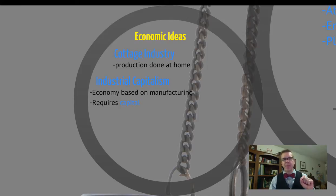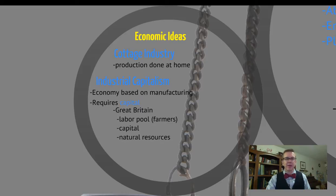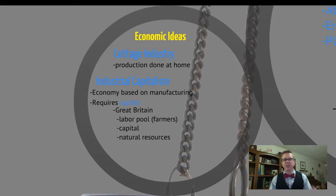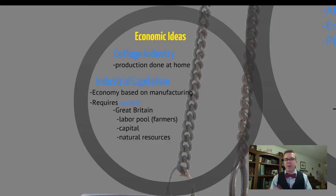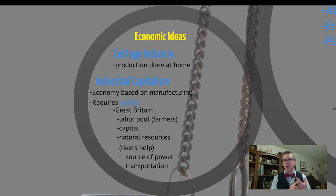Industrial capitalism requires capital — the money and wealth that is invested in these factories. Without capital, you can't get this done. Great Britain is able to become the first country to go through the Industrial Revolution for several reasons. First, they've got a large labor pool — farmers who, once replaced by new agricultural inventions, come to the cities just in time to become labor for the new factories. It also requires capital and natural resources. In Britain's case, that's coal and iron. They also have rivers, which are a water power source for the earliest textile factories.